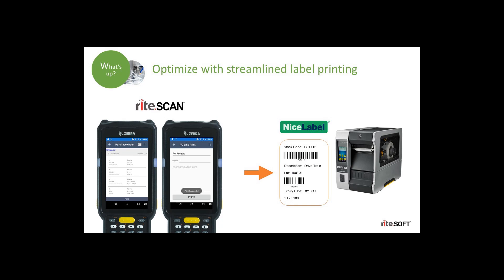WriteScan also allows you to configure the data sent to the label printing software. For instance, WriteScan can send information such as the PO number, the stock number, quantity of that item, lots, and serial numbers. The label printing software will then automatically print those labels based on the information provided from WriteScan.